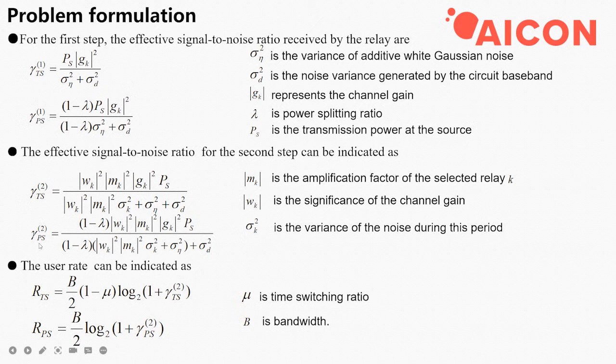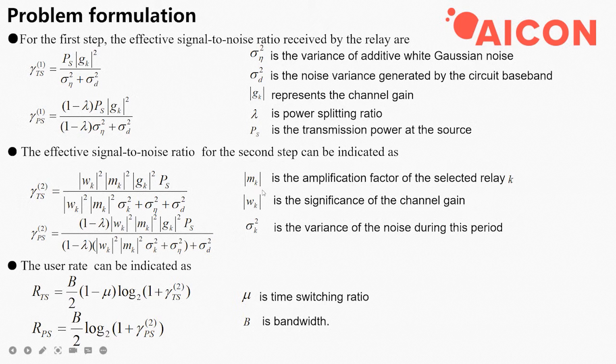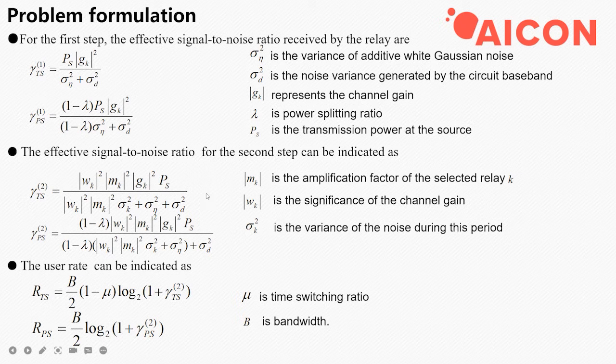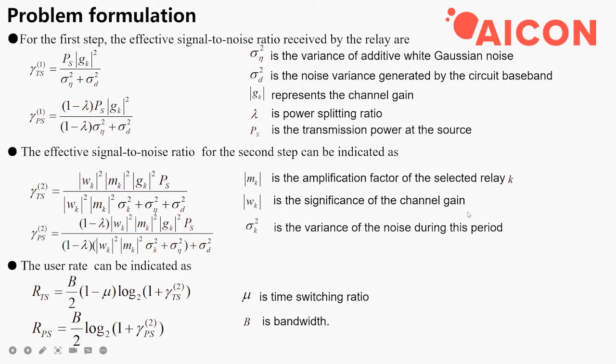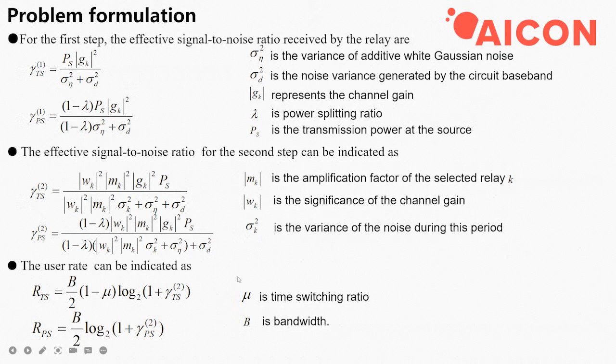The effective SNR for the second step can be indicated as this and this. It is TS and that is PS. m_K is the amplification factor of the selected relay. w_K is the significance of the channel gain. Sigma_K squared is the noise during this period.